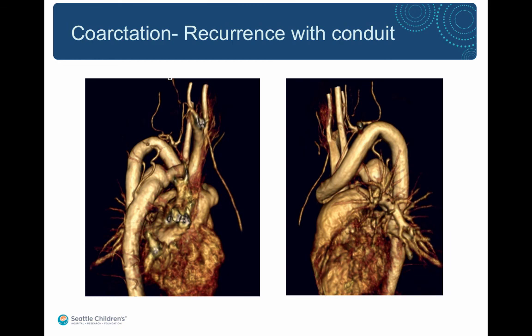This patient had a subclavian flap repair with recurrent coarctation and then an aorta-to-aorta conduit was placed. The conduit is widely patent with a small kink seen at the level of the arch, and there is aneurysmal dilatation of the aorta where the subclavian flap was anastomosed.